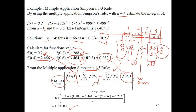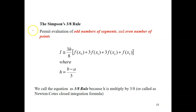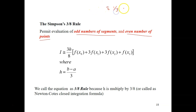If we use the multiple application Simpson's one-third rule, you will get an improvement in your answer. Now let's move on to the next method, which is the Simpson's 3/8 rule. For this rule, it permits evaluation of odd numbers of segments and even numbers of points. Previously, in Simpson's one-third, it was the other way around — even segments, odd points.